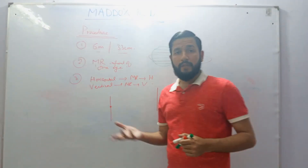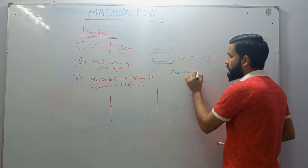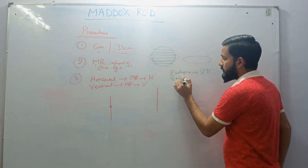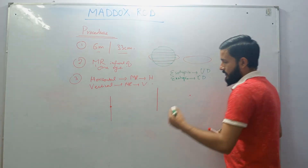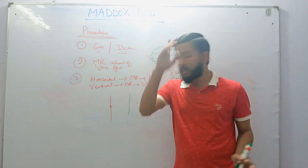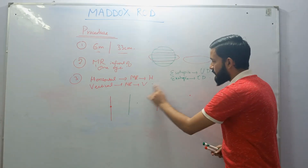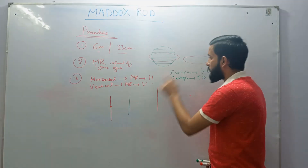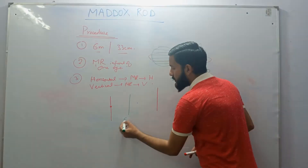For esophoria, the diplopia is uncrossed. If the patient reports the line on the right side and the dot on the left side — the same side as the eye viewing each image — the diplopia is uncrossed, and you label this as esophoria.